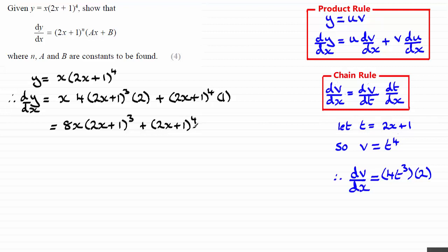Now, I can pull out 2x plus 1 to the power 3 as a common factor across here. So, if I pull out that common factor, I end up with 2x plus 1 all cubed, multiplied by this 8x and then the 2x plus 1 again.